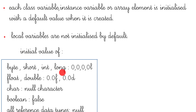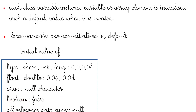The default values for integer types byte, short, int, and long are all zero (with long suffixed as 0L). For float the default is 0.0f, and for double it is 0.0d. The default value for char is the null character, and for boolean it is false. All reference data types — classes, arrays, and interfaces — have a default value of null.